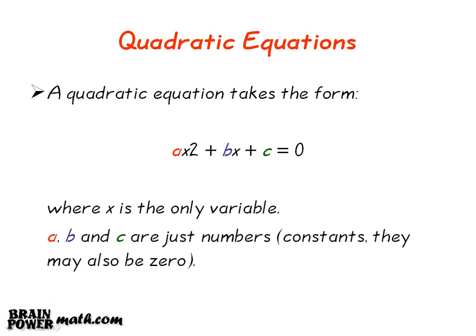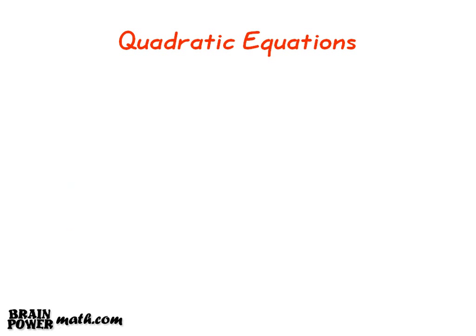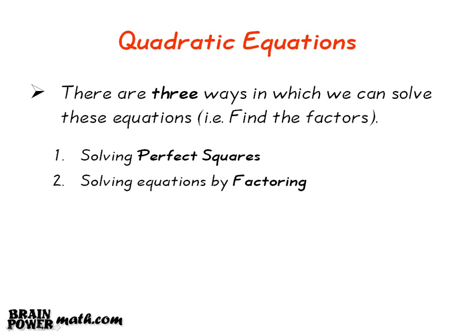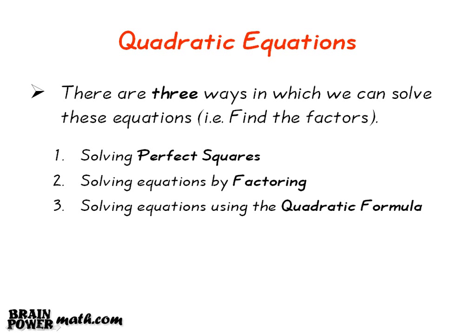a, b, and c are just numbers — they can be any number depending on what the question is asking. x is also a number which, when inserted into the equation, proves the equation to be true, i.e., it makes the equation equal to 0. There are three ways in which we can solve these equations, or in other words find the factors: the first is solving perfect squares, the second is solving equations by factoring, and the third is solving equations using the quadratic formula.